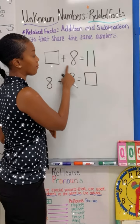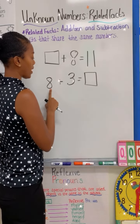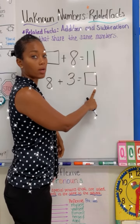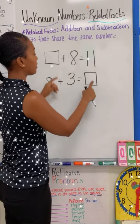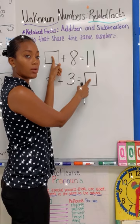I have an unknown number plus eight that's equal to 11. I also have eight plus three that is equal to an unknown number. My job is to find what answer I'm going to put into the unknown number.